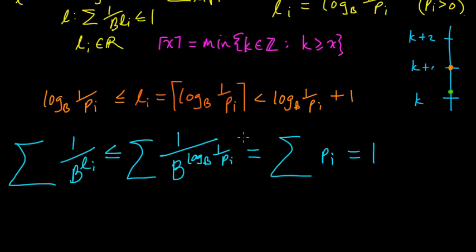By the Kraft-McMillan theorem, since these are non-negative integers satisfying the Kraft inequality, there exists a uniquely decodable code with these lengths. In fact, we gave examples earlier of how to construct a prefix code with given lengths, so we know how to actually build it.